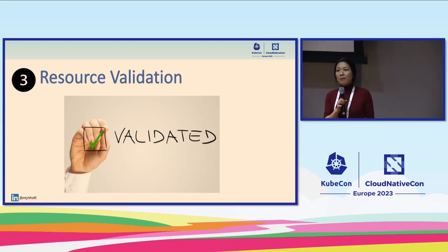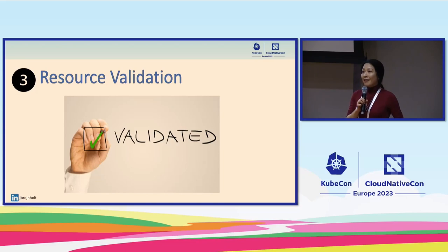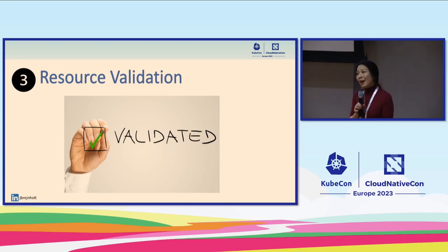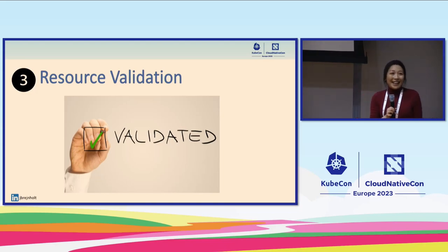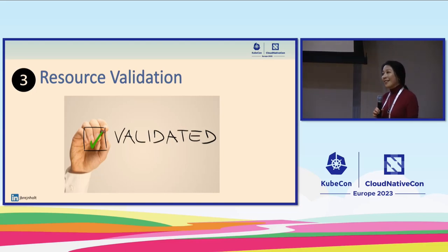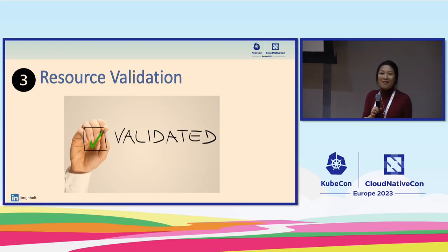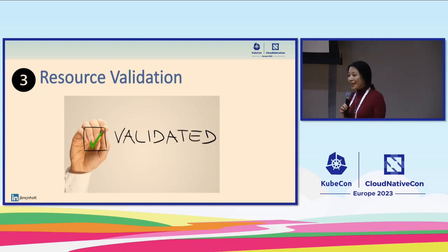The third feature is resource validation. You can use Kyverno to validate many kinds of resources — ConfigMaps, Deployments, Pods, and more. For us the highest value comes from Pod Disruption Budget validation. A misconfigured PodDisruptionBudget can hold a whole node from upgrading — for example, if `minAvailable` is set to 1 but there's only one replica. In that situation, it's much easier to configure Kyverno to look at the deployment and say 'you shall not pass because you are misconfigured.'